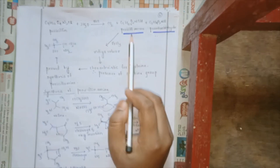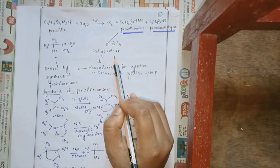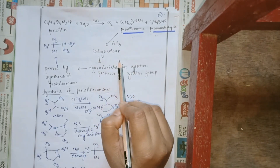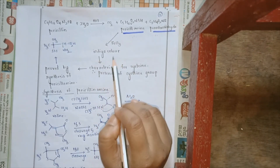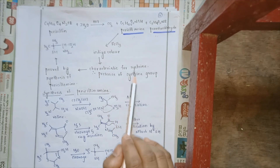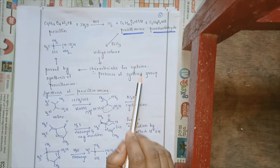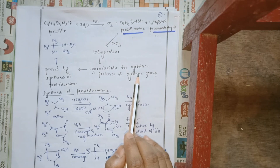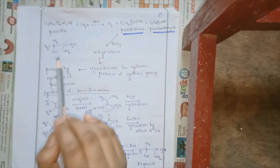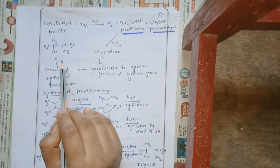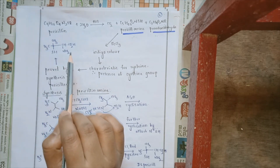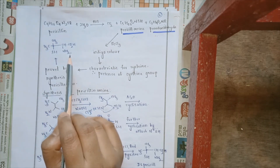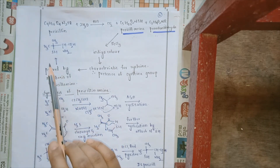Penicillin amine when it reacts with FeCl3 gives an indigo color, which is characteristic for the presence of cysteine — an amino acid containing a sulfur group. This is the structure of penicillin amine, and it has been confirmed by its synthesis.